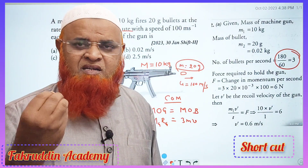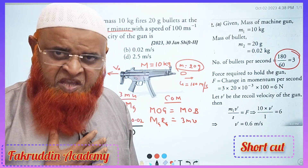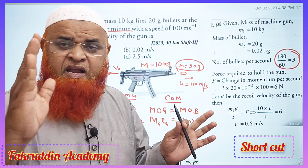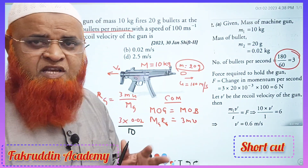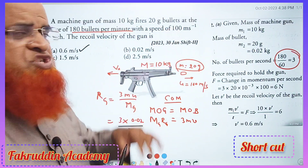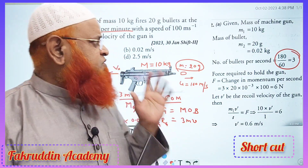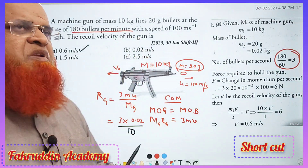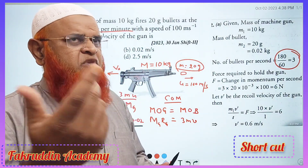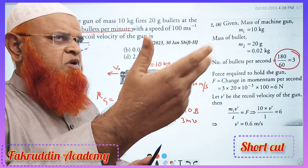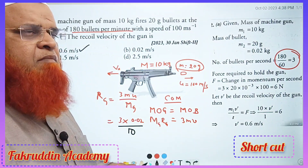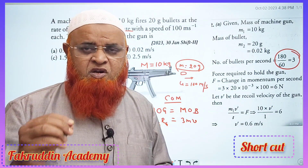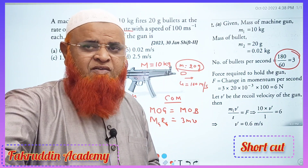I will not even take a pen and paper — I'll see the question and directly tell the answer. It's very simple: 180 bullets per minute means 180 divided by 60, which is three. So three into small m into u divided by capital M — that's it. I can do the solution in my mind only. Hope you have enjoyed this method of solving the problem. Thank you very much.